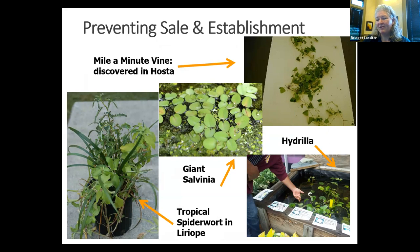On one side of the slide you'll see that we found some tropical spiderwort one year in Liriope, a horticultural plant. We also famously found giant salvinia all over the coastal plain about 10 years ago — it was a contaminant in the water garden industry. When people went to get a scoop of their favorite water lily, they got a side of giant salvinia. We also find hydrilla as a contaminant in tanks with other aquatic plants, and we found mile-a-minute vine coming into the state growing in potted hosta plants. That's one of the major ways that pests come into our state.